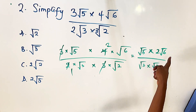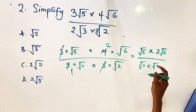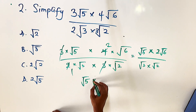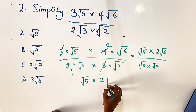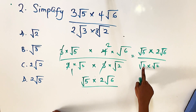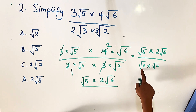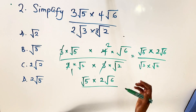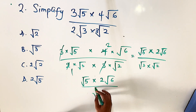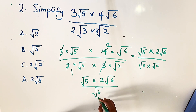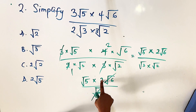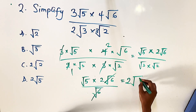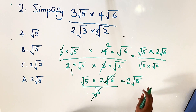Simplifying further: the numerator is root 5 times 2 root 6. For the denominator, when you have two values under root signs you can multiply what's inside and keep one root sign — so root 3 times root 2 equals root 6. Root 6 in the numerator cancels root 6 in the denominator, leaving 2 times root 5, which is 2 root 5. The answer is option D.